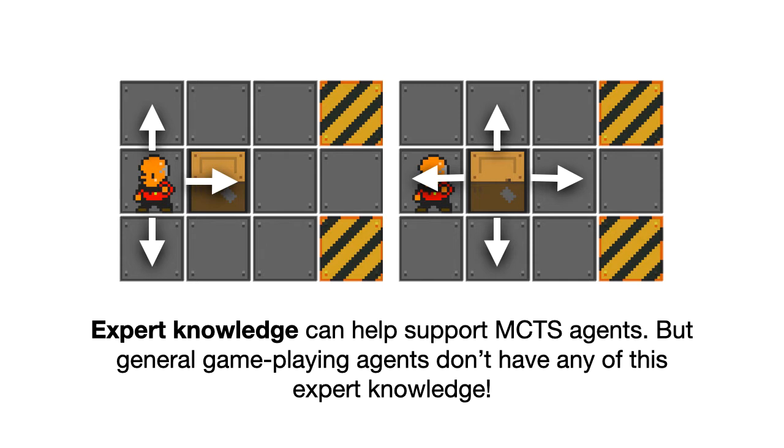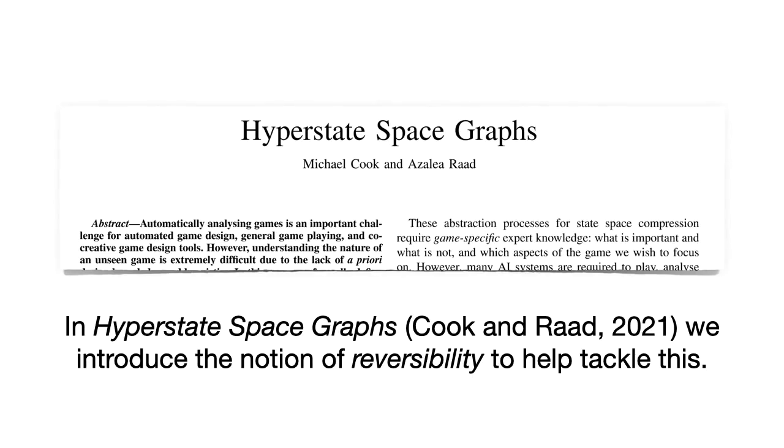So I wanted to look at a way that I could assist my automated game design systems in deciding how to play a game efficiently. So what can we do about these problems? Well, back in 2019, and now this year again in 2021 in the Transactions on Games journal, I wrote a paper about reversibility and hyperstate space graphs with Azalea Raad. And the idea here was to tackle some of these problems in the context of state space graphs. So not agent pathfinding or agent control, but just the general idea of analyzing a game. So let me tell you briefly how reversibility works.